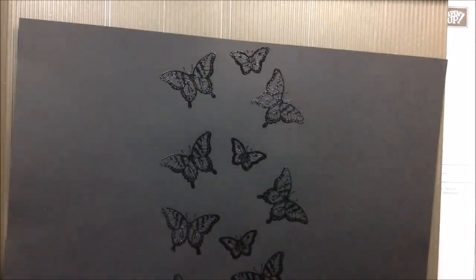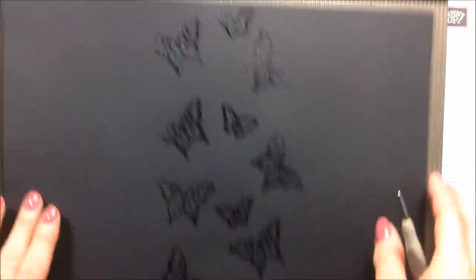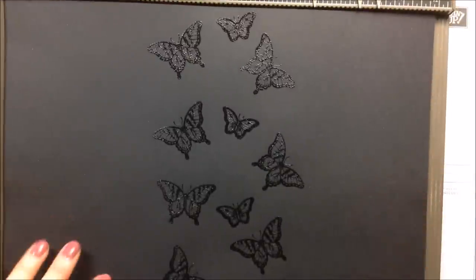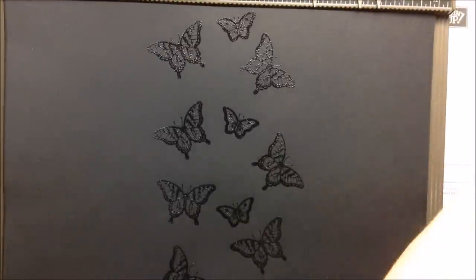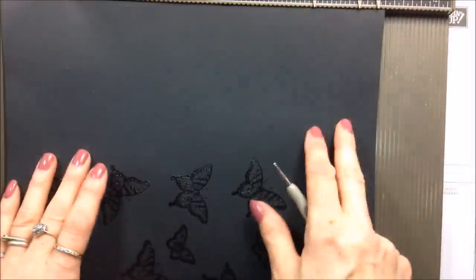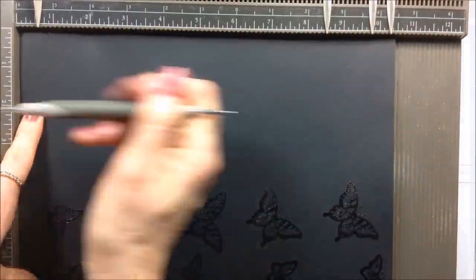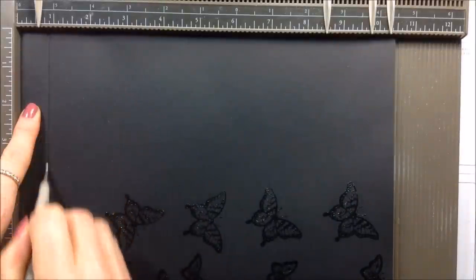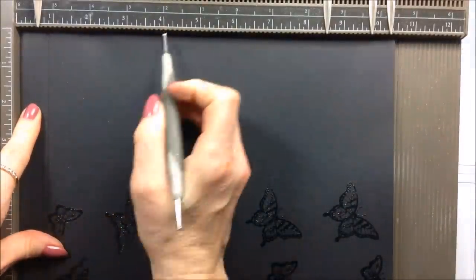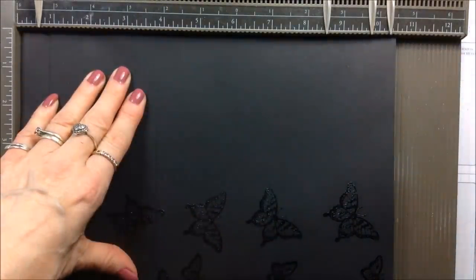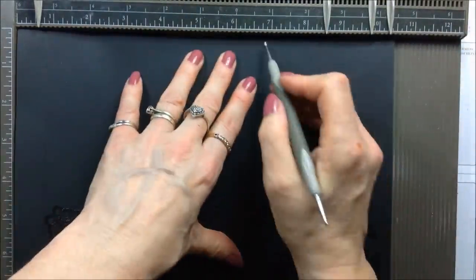With the piece of cardstock that measures 10 and a half inches along the top of your board here, you're going to do some scoring at three quarters of an inch, three and three quarters, six and three quarters, and at nine and three quarters.